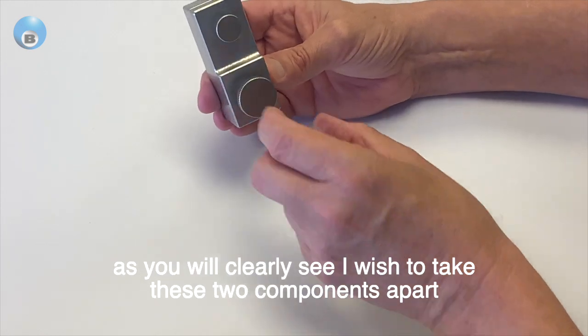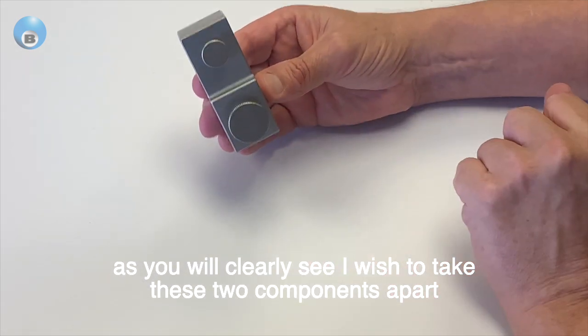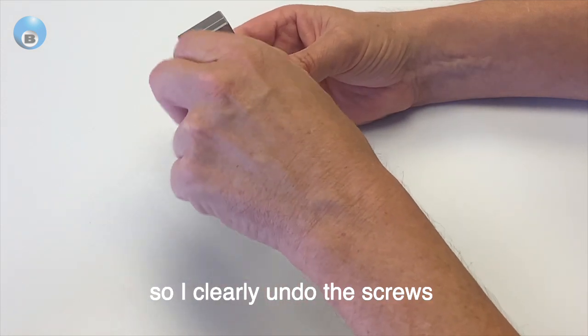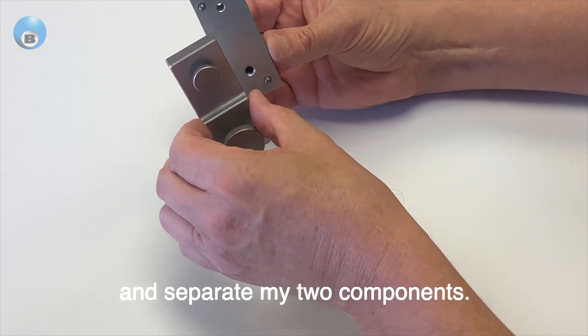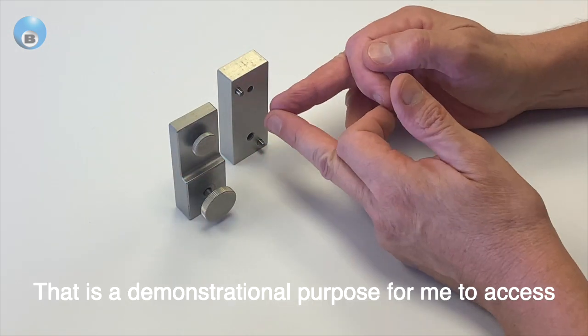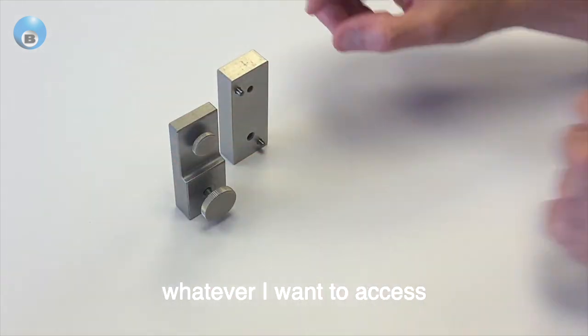As you clearly see, I wish to take these two components apart, so I clearly undo the screws, separate my two components. That's for demonstrational purposes, for me to access whatever I want to access.